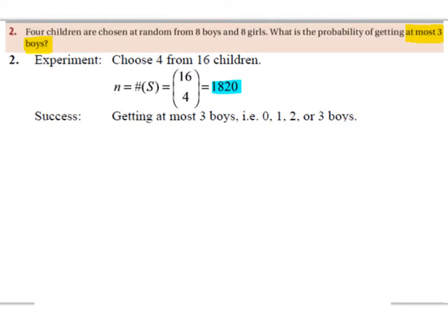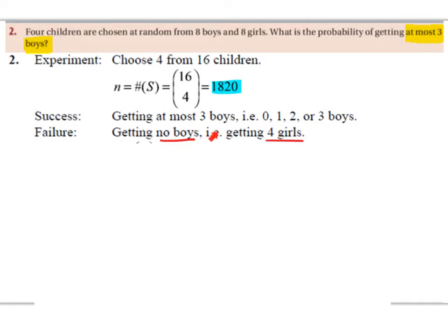So if this is the success, then a much quicker method is to work out the failure — the probability of the failure — and take that away from one, because the success and the failure of any experiment will always add up to one. So the opposite of the success is going to be the failure. The opposite of getting at most three boys is getting no boys, which is the same as getting four girls.